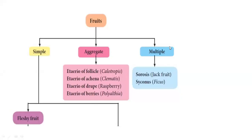Hello all. So now, fruit. Fruit is ripe ovary. Fruit is three types: simple fruits, aggregate fruits, multiple fruits.